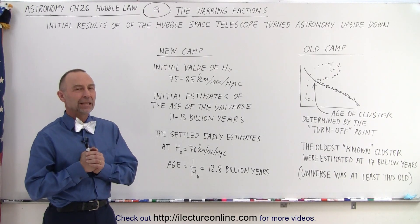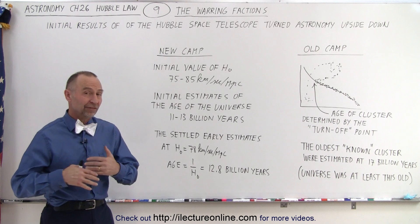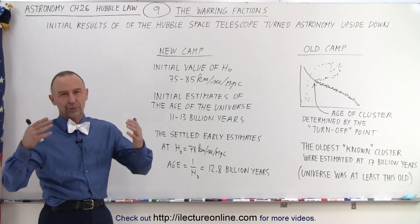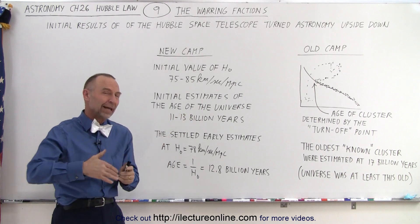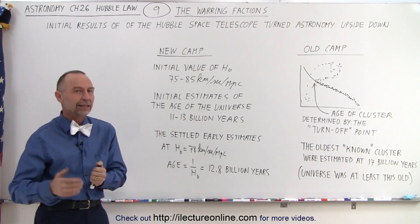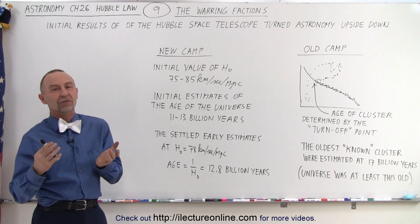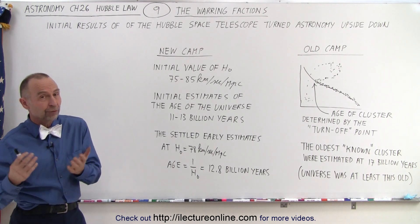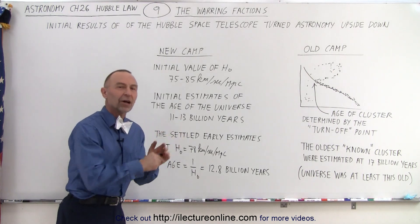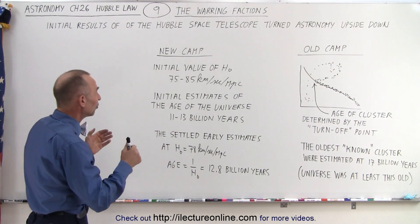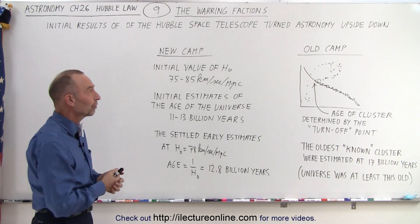Welcome to ElectronLine. When the first results came back from the Hubble Space Telescope, we had the answers — but we had to crank through a lot of data and do a lot of calculations. The initial estimates of the Hubble constant and the age of the universe were very different from what we thought before we sent the Hubble Space Telescope up there, and so it was a really big upheaval in the world of astronomy.